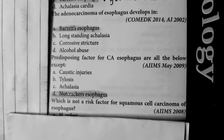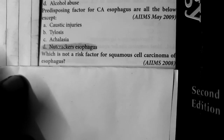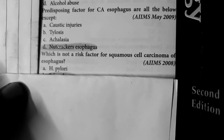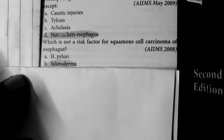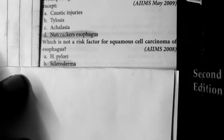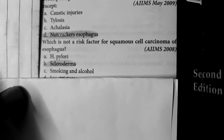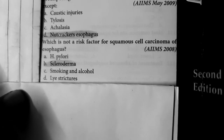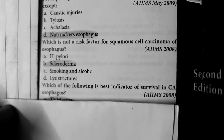Question number 9: Which of the following is not a risk factor of squamous cell carcinoma of esophagus? H. pylori is a risk factor of squamous cell carcinoma. Scleroderma is not a risk factor of squamous cell carcinoma; scleroderma is actually a risk factor for adenocarcinoma. H. pylori is a risk factor for squamous cell carcinoma and is protective for adenocarcinoma. Smoking and alcohol are risk factors of squamous cell carcinoma. Lye strictures are also a risk factor for squamous cell carcinoma. So the list of risk factors for squamous cell and adenocarcinoma is very important.